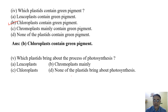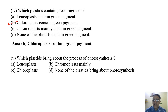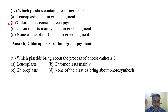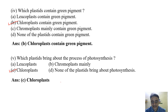The last question: Which plastids bring about the process of photosynthesis? Options are leucoplasts, chromoplasts, chloroplasts, or none of the plastids. Since chloroplasts contain green pigment, they bring about the process of photosynthesis. So the correct option is C — chloroplasts.